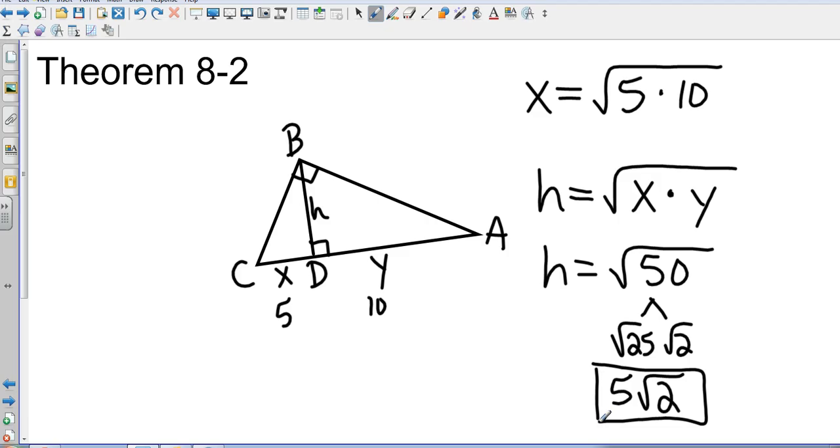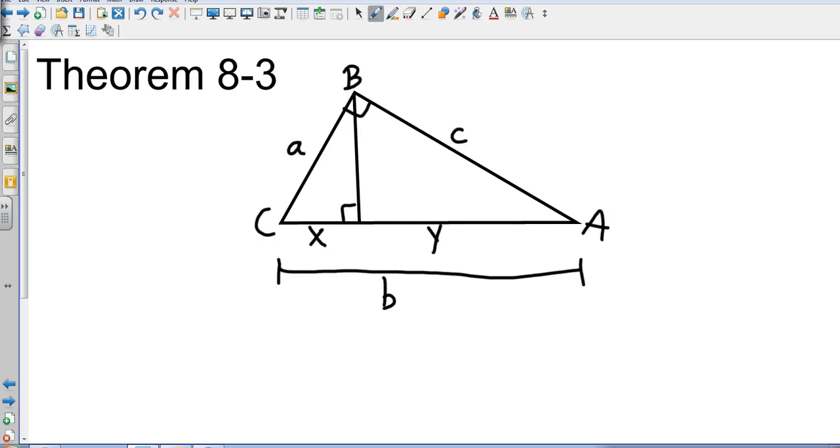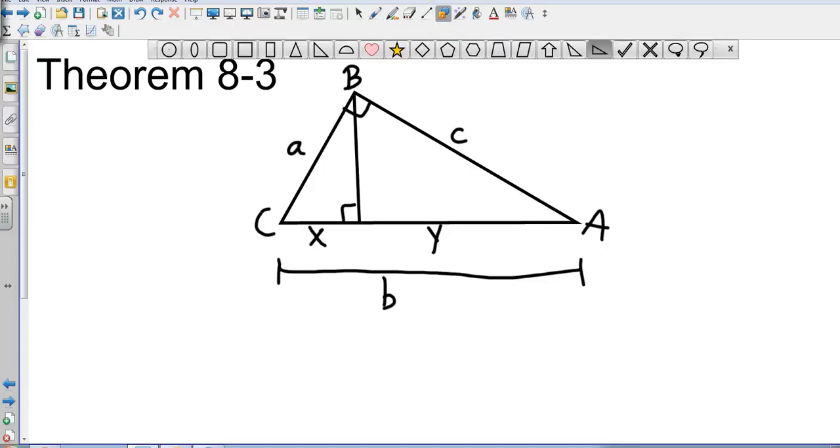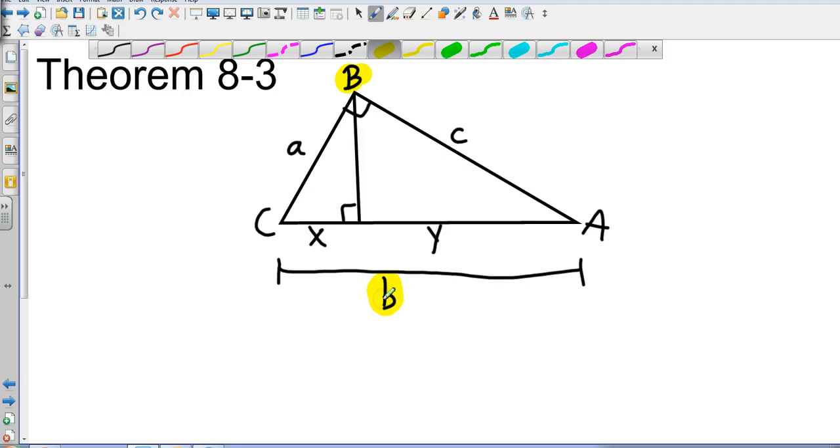Let's step on to theorem 8-3. This is a crazy little creation. Notice that the angles are in capital letters and the sides are in lowercase letters, and they correspond to the opposite. B, the opposite side is B. C, the opposite angle is C. And then angle A is opposite side A. Still have the little pieces X and Y. So now we're going to be finding A and C.